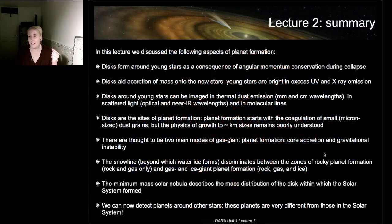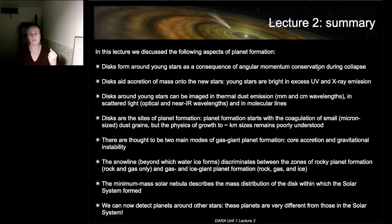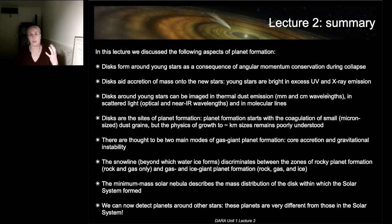To recap this second lecture: we looked at protoplanetary disks and discussed how they arise from angular momentum conservation during collapse. We talked about the disk's role in accreting mass onto the new star, and how the accretion shock from gas funneled along magnetic field lines makes these young stars bright in UV and X-ray emission.